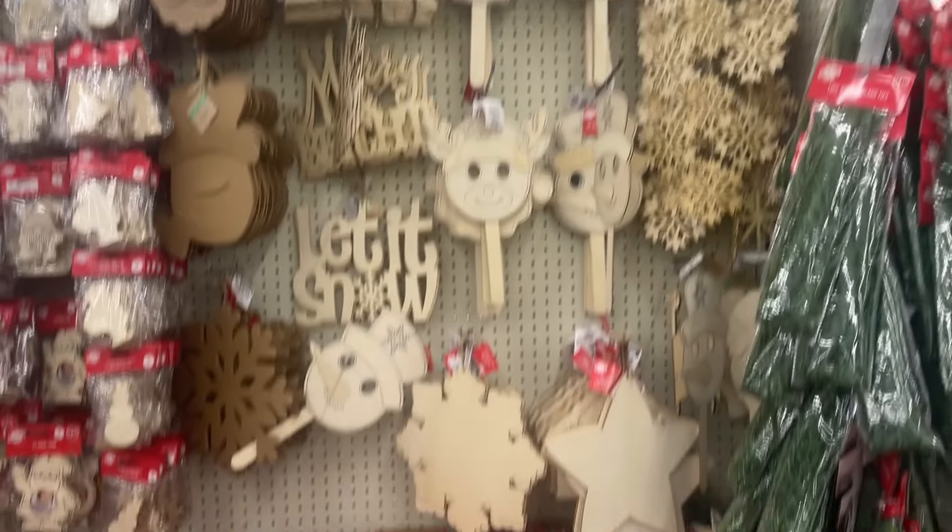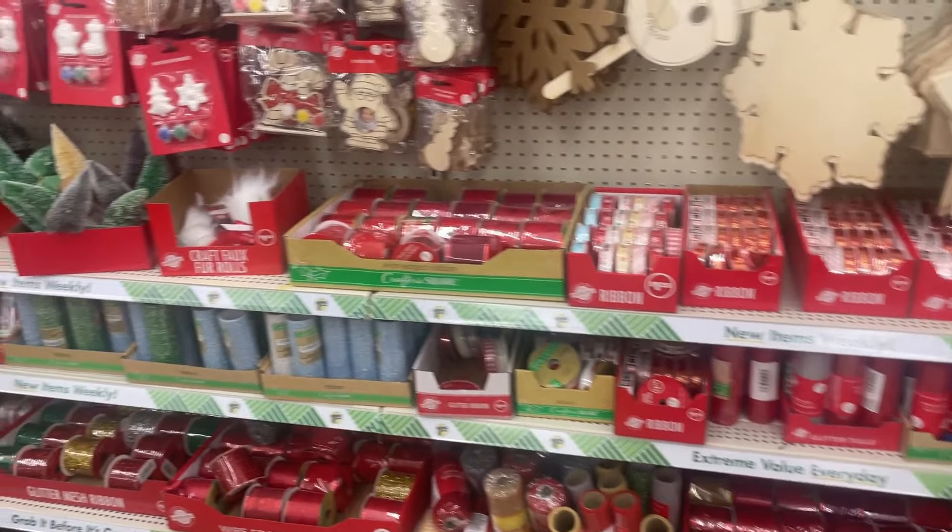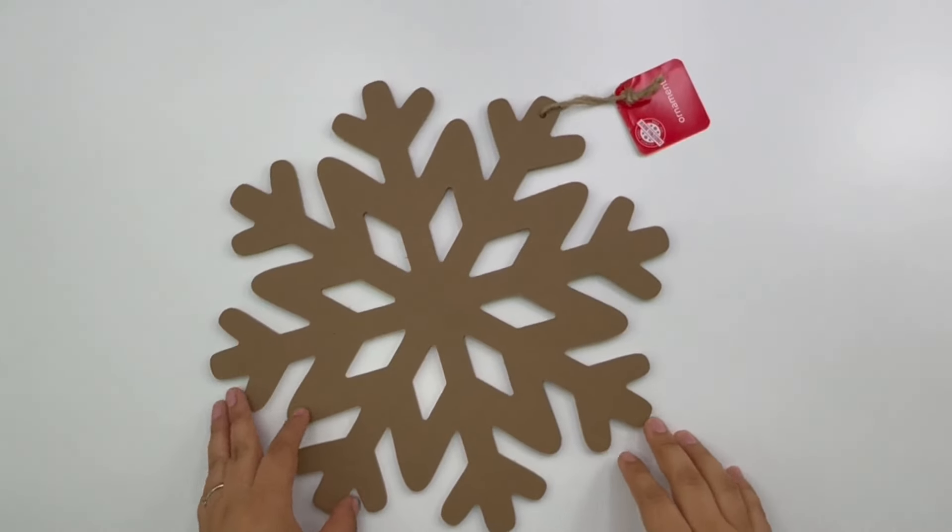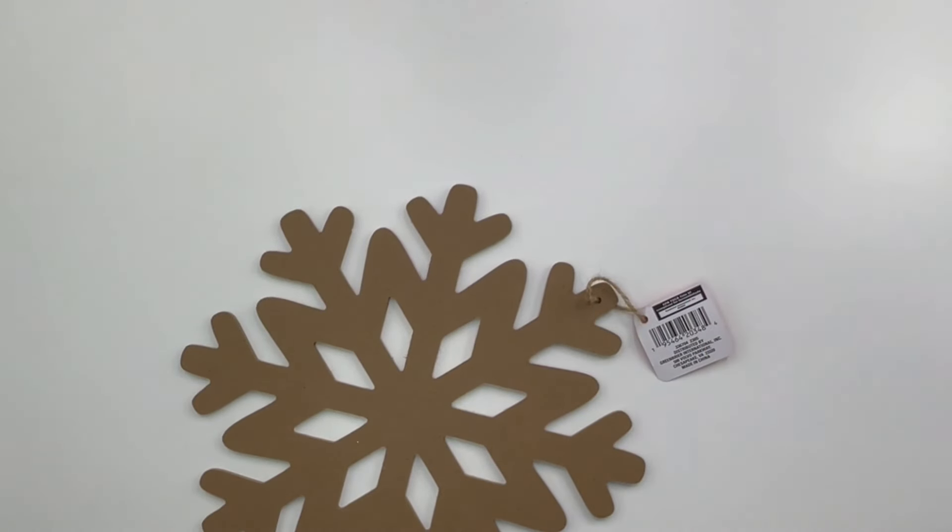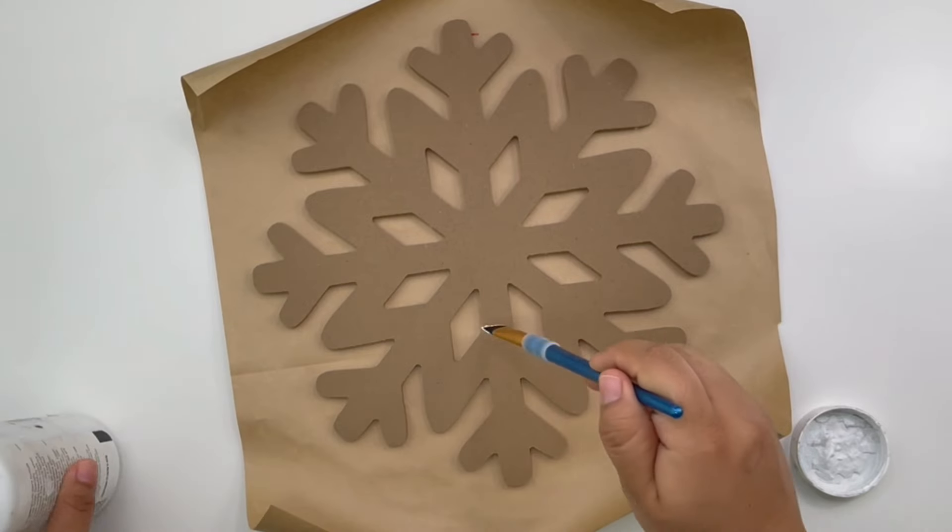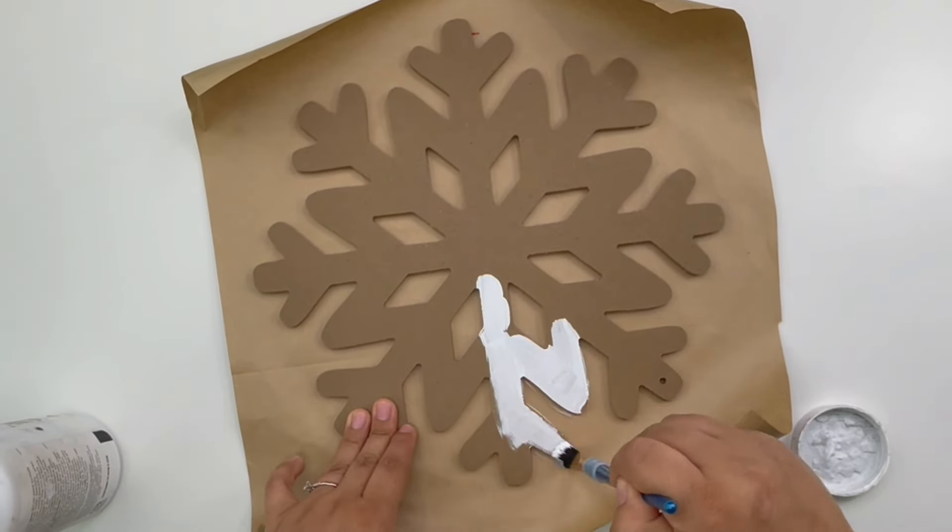For my next project I will be using a large snowflake, the cardboard one not the wood one. I'm going to start by just painting mostly all the edges white. I'm going to leave the center blank because I will be adding something else in the middle.